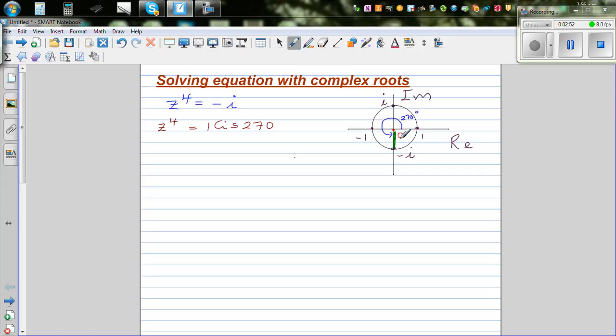So now I want to find z, so I'm going to raise this. I can say z to the power of 4 raised to 1 quarter is equal to 1 cis 270 raised to 1 quarter. So now here I'm going to use De Moivre's theorem. Power of power multiply, so you can say this is your first root z1 would be 1 raised to 1 quarter cis 270 times 1 quarter.